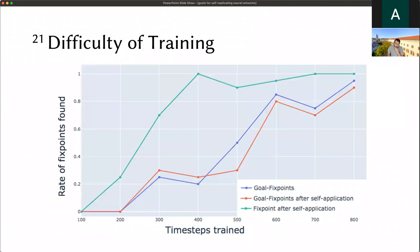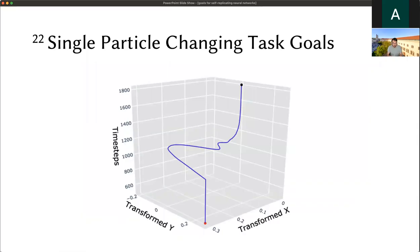We analyzed if this makes it any more difficult for the network to be trained, and obviously yes it does. On the x-axis you see how many time steps we train the network for, and on the y-axis how many fixed points we found. If we just train for fixed points—networks that can self-replicate but nothing else—of course training is easier and faster. But we can also train for these goal fixed points, networks that can self-replicate and fulfill the goal. This also works, just a little bit slower.